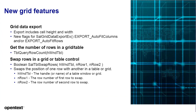Some new grid features: grid data export now includes cell height and width, so the formatting of the grid is passed over to the Excel file using new parameters — export auto fit columns and export auto fit rows. You can get the number of rows in a grid or table using table query row count without doing the slower SQL get results at count. And you can now swap rows in a grid or table using the function sal table swap rows, specifying the row numbers and positions.